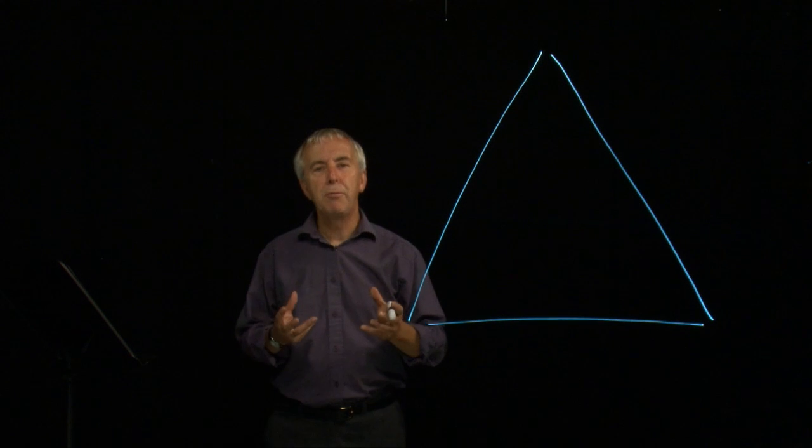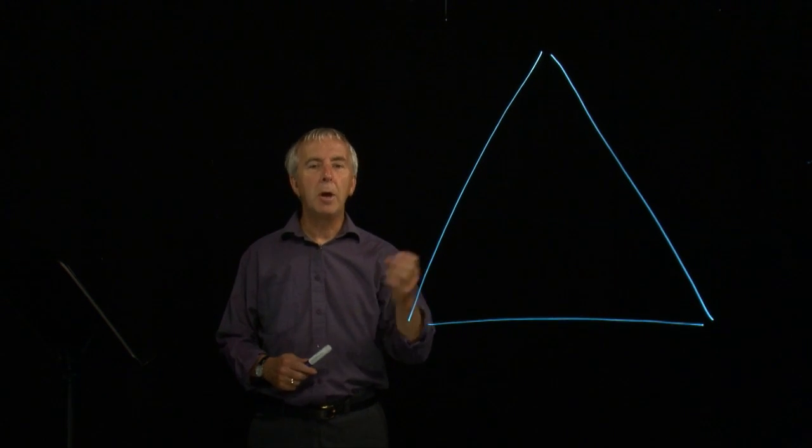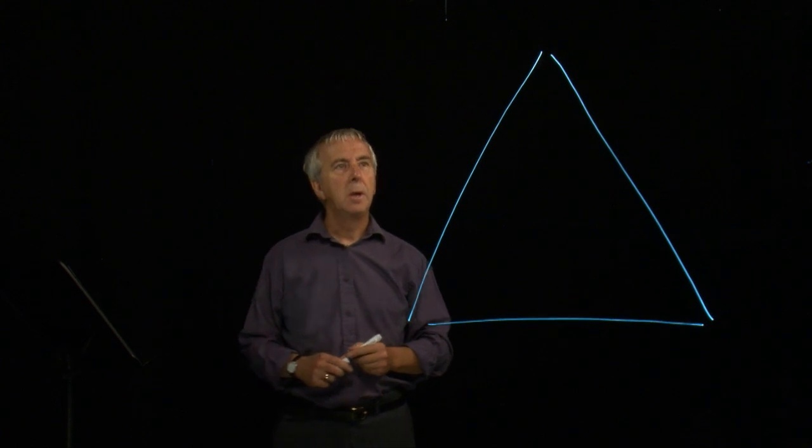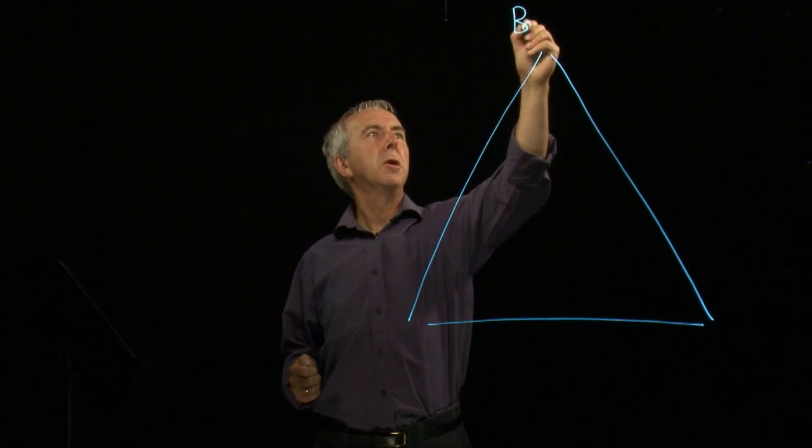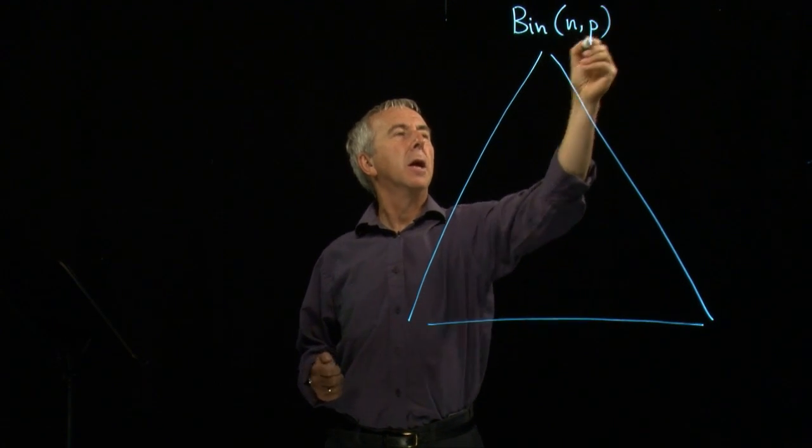Let's see now how these three different distributions fit together and summarize the different conditions. Let's start off with the binomial distribution, which has two parameters, n and p.